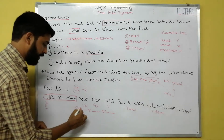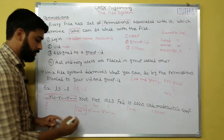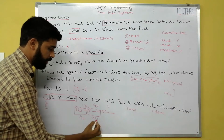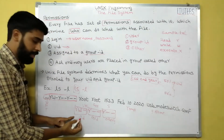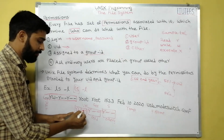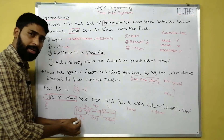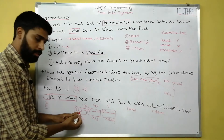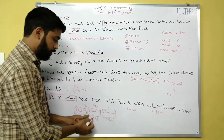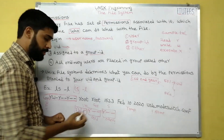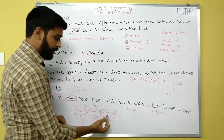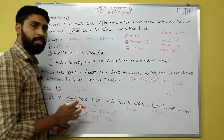In the permission string, the first three characters belong to the user ID, the next three to the group ID, and the last three to others. For example, rw- means the user can read and write but cannot execute. r-- means the group can only read. r-- for others means they can only read and cannot write or execute.